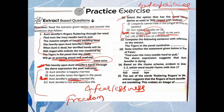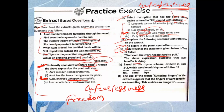Part D: State whether true or false — 'Find even the ivory needle hard to pull — the above expression suggests that Aunt Jennifer is dying.' This is false. It does not mean she was dying. It means she was burdened by the massive weight of uncle's wedding band, showing she was unhappy in her marriage, not that she is dying.